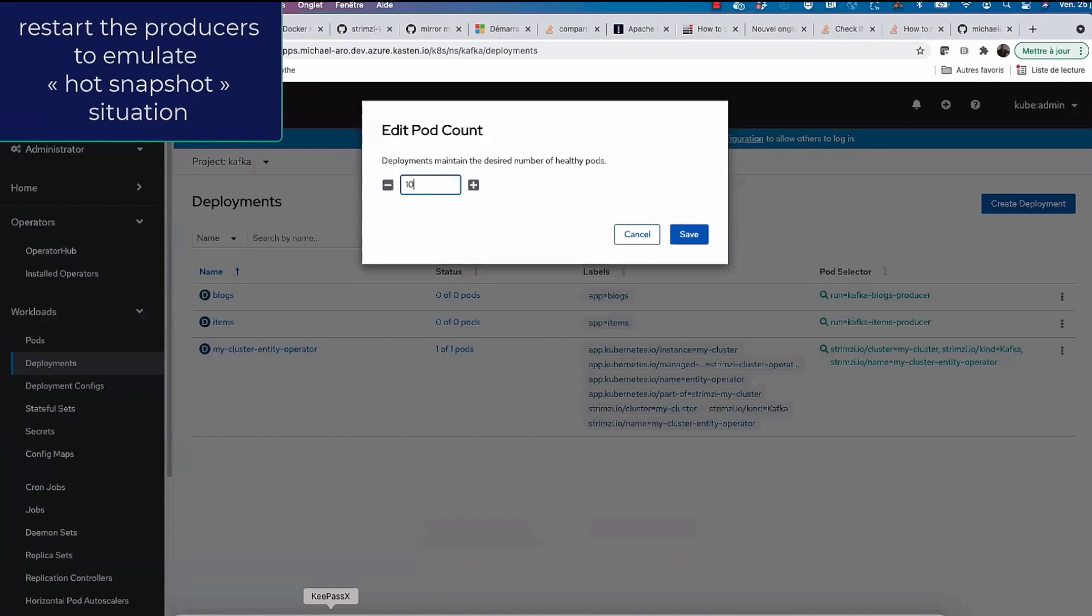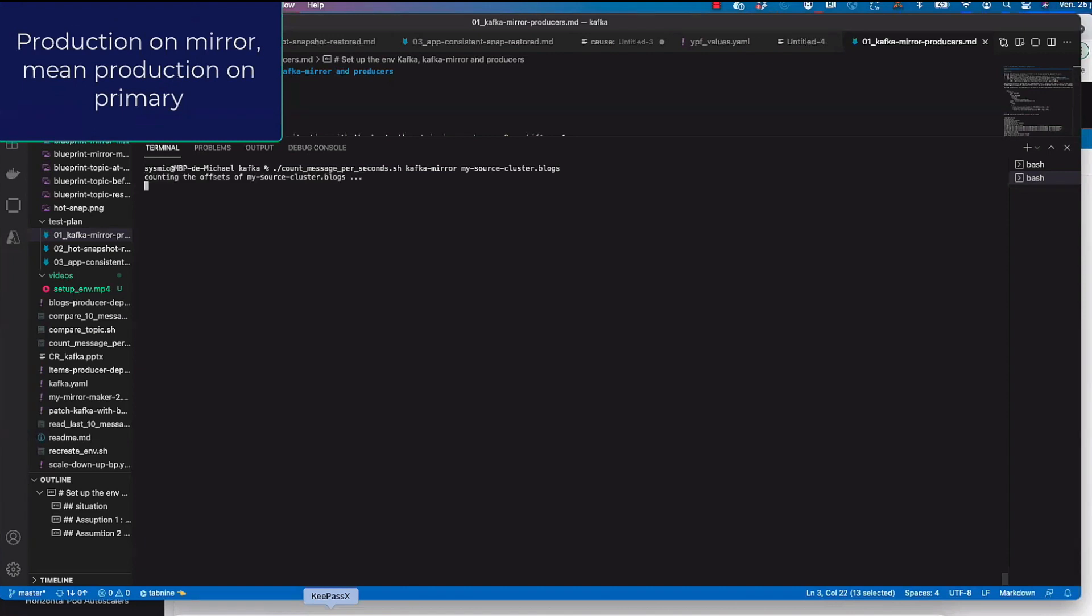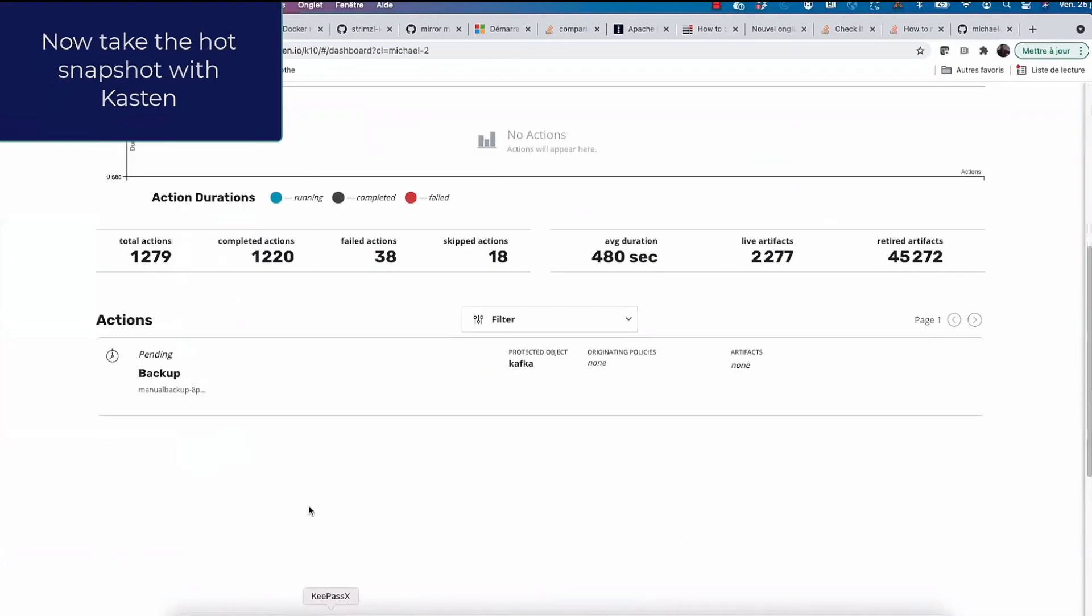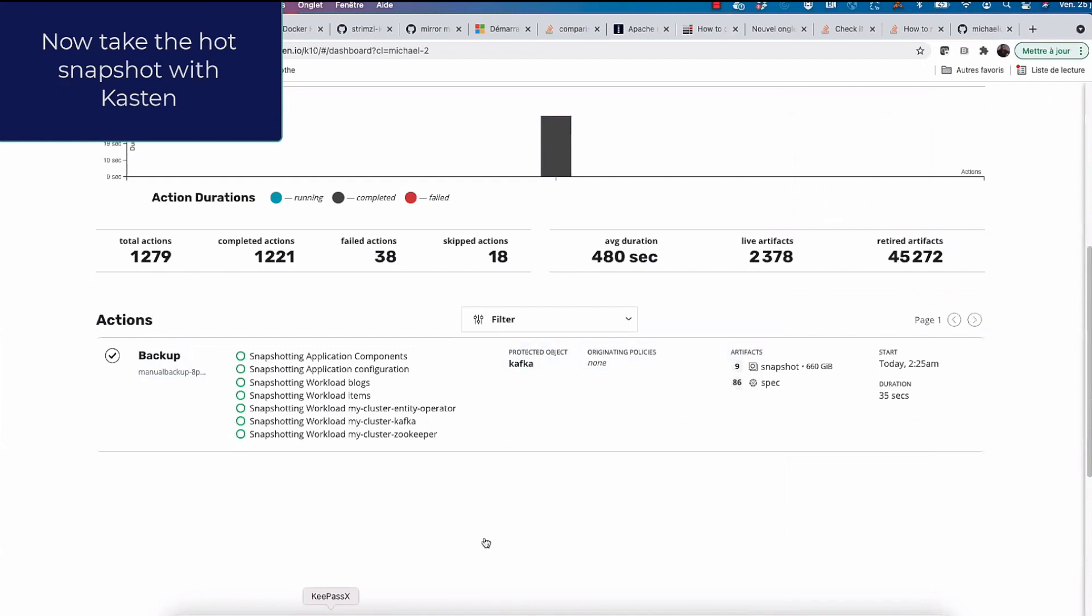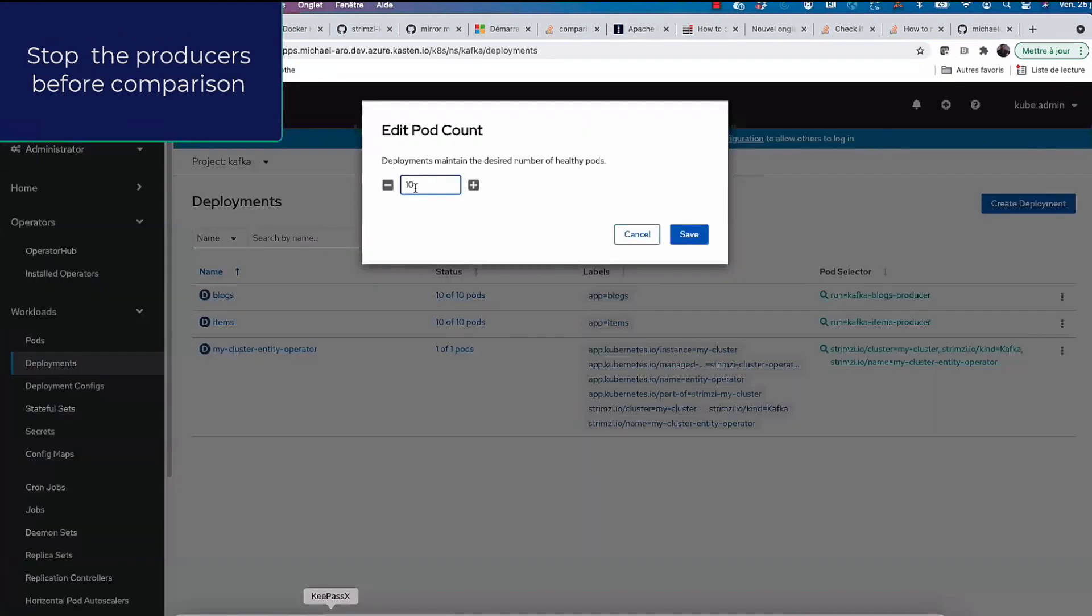So I restart all my producers because I want to see what's a hot snapshot. I want to experience that. Then I'm just checking that I'm producing a big number of messages per second before taking this hot snapshot. And that's what I'm verifying here. It's okay. I'm going to Kasten. I take a snapshot. The snapshot is taken. The backup is starting. Backup is made very soon. I'm happy with that. And now I'm going to stop all the producers because I want to check everything. I need to stop all the production to compare.